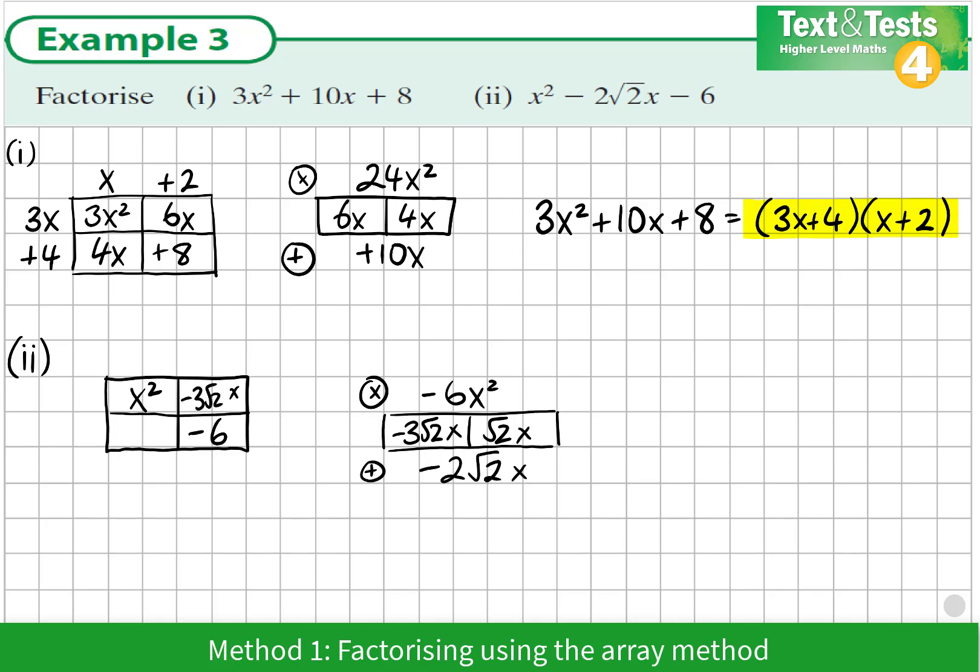So we place either of these terms in either box. And then we look for the highest common factor of the x² and the -3√2x. x is the common factor here. x times x would be x². Then we would see that -3√2 is the missing part. And we see √2 is the other missing part.